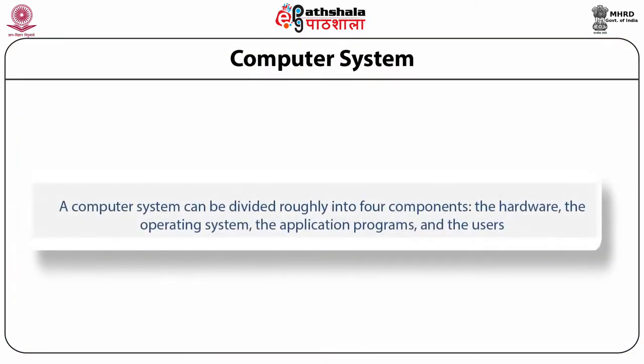Operating system ensures the correct operation of the system. To prevent user programs from interfering with the proper operation of the system, the hardware must provide appropriate mechanism. A computer system can be divided roughly into four components: the hardware, the operating system, the application programs and the users. Hardware contains the central processing unit, the memory, and the input-output devices which provide the basic computing resources.